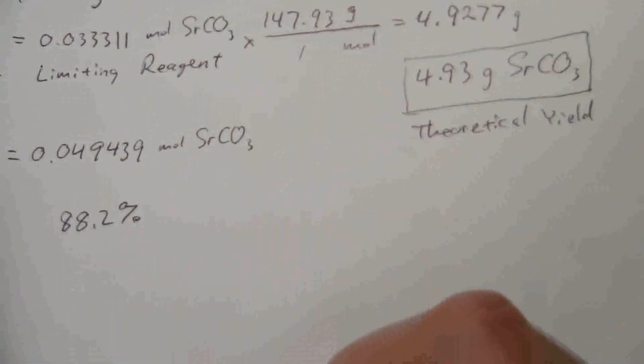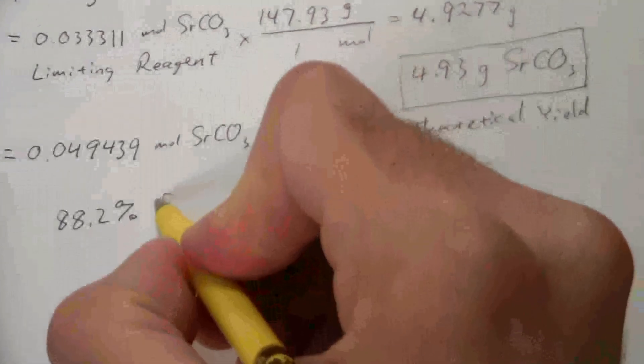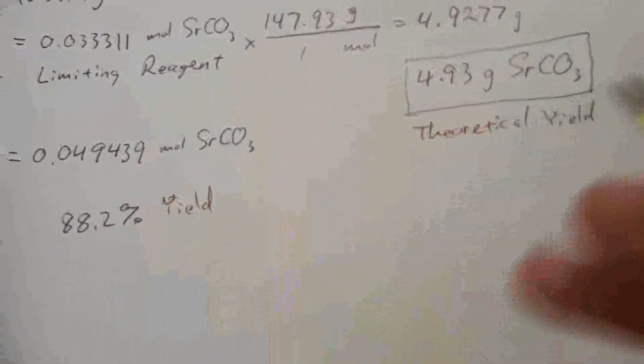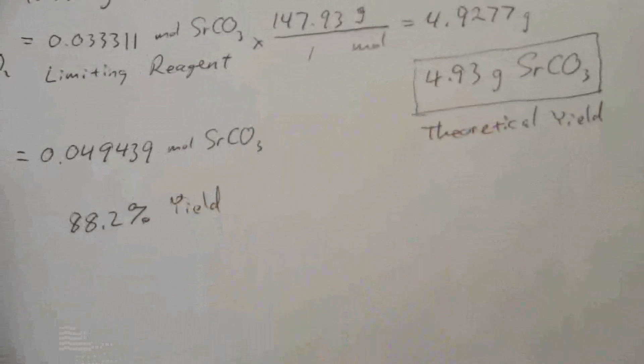If I know it goes by 88.2%, then how much would I expect to collect?